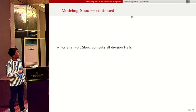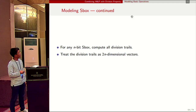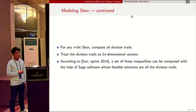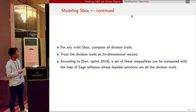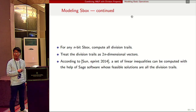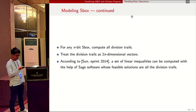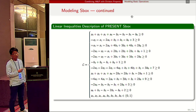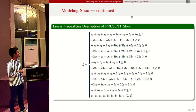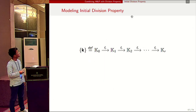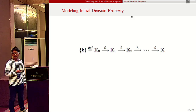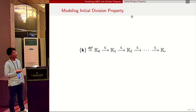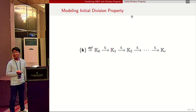For any n-bit S-box, we compute all division trails using the algorithm, then treat each division trail as two n-dimensional vectors. According to Xiang's idea, we compute a set of linear inequalities with the help of Sage software, such that all feasible solutions are the division trails. These are the 11 inequalities found for the PRESENT S-box, where a_3, a_2, a_1, a_0 denote the input division property and b_3, b_2, b_1, b_0 denote the output division property.